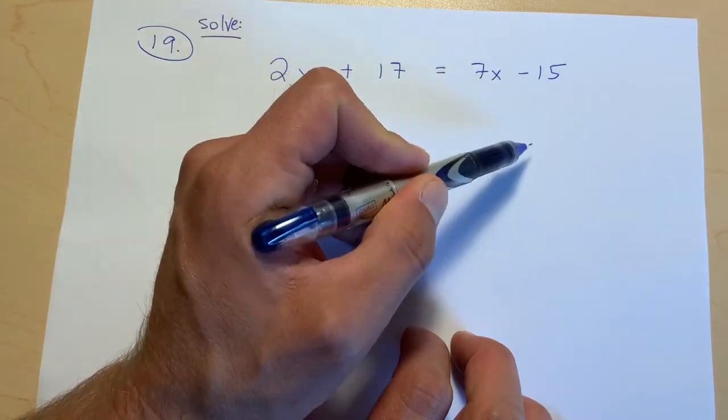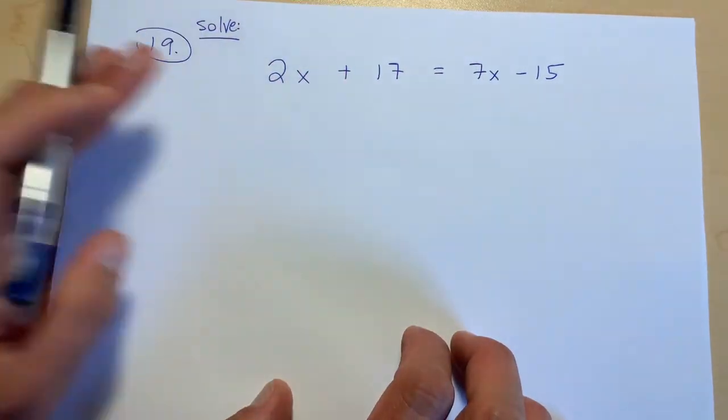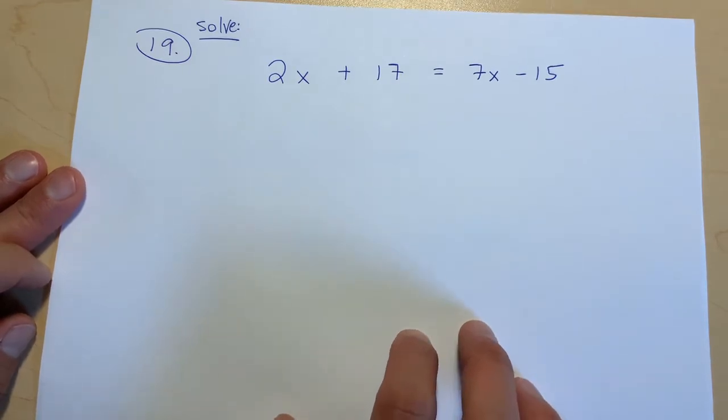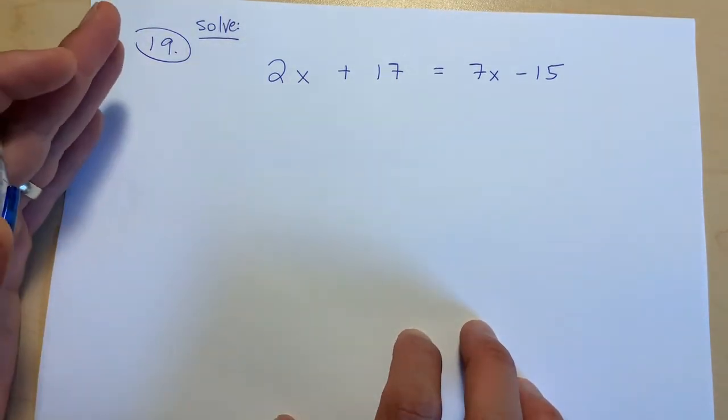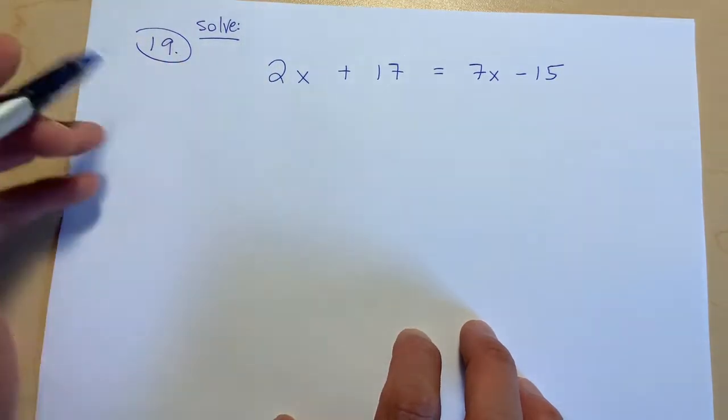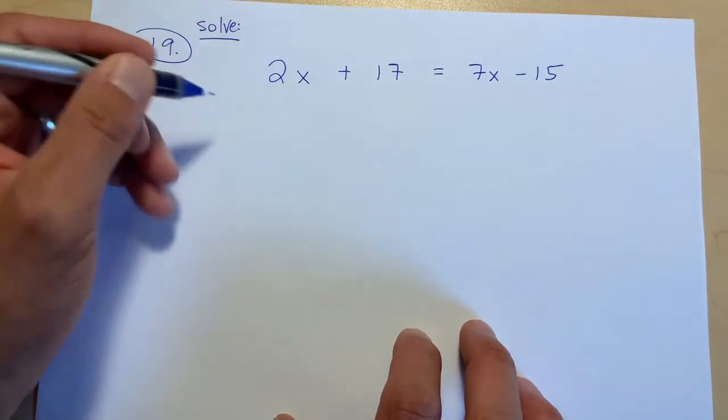I always like keeping the variables, like the x's, on the left side of the equal sign, so I'm going to put all the x's over on this side. This 2x is already here, so that's good.